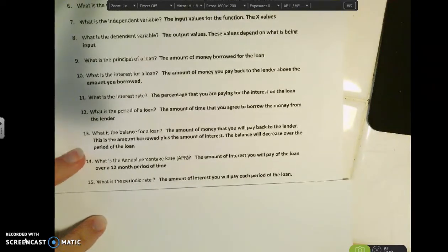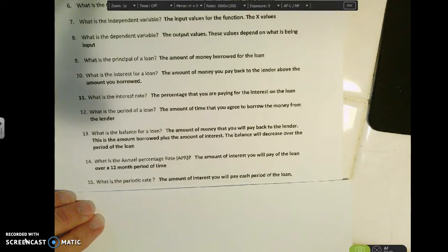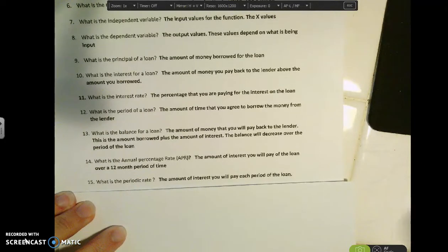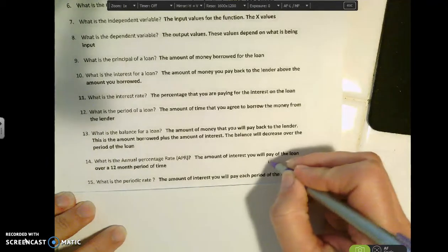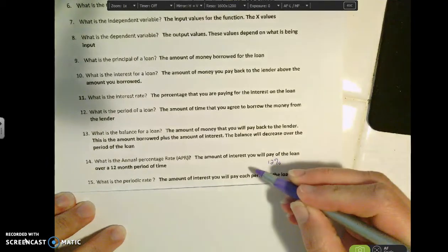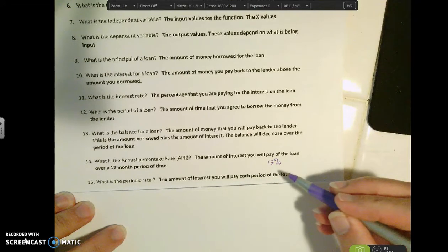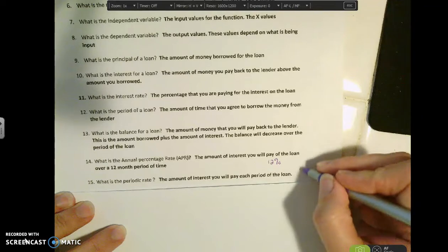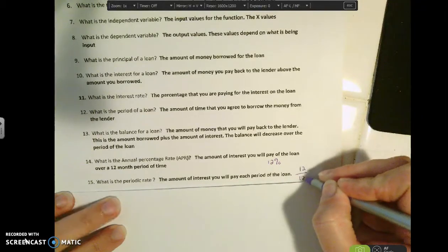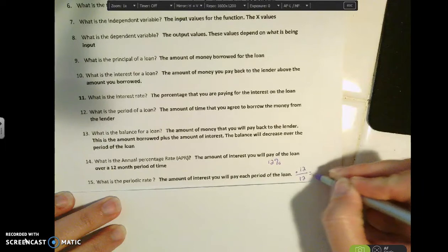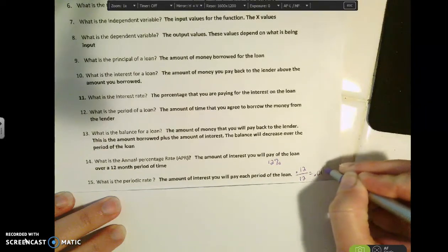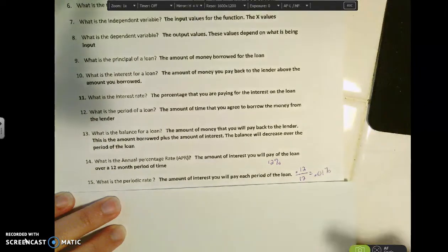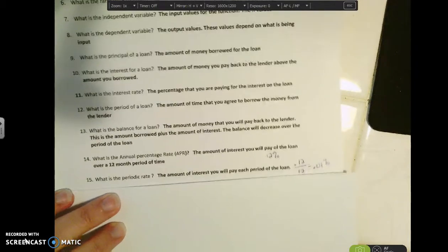The periodic rate is the amount of interest that you're going to pay for each period of the loan. So if I have a loan that's 12%, and if 12% is my annual percentage rate, if I'm going to make a monthly payment, then the period is one month. So that means that it would be 12% divided by 12. So that would be 0.01%. So that's how much money, that's the amount that I agree to pay back each month of the loan.